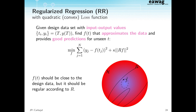The problem of regularized regression: we want to approximate input-output data and get good predictions, minimizing out-of-sample error. We impose a regularization term where R is a linear differential operator — so the dynamical constraint is a linear differential operator on f. These terms do not use the data; they express your prior knowledge on f before you saw the data. The solution should be close to the data but regular according to R.